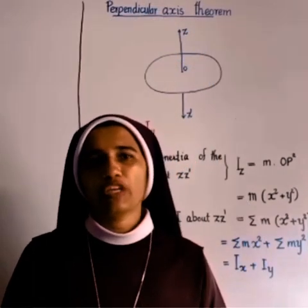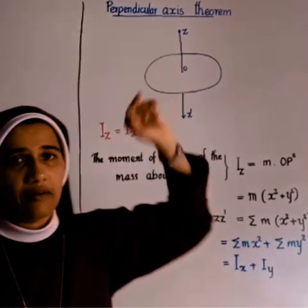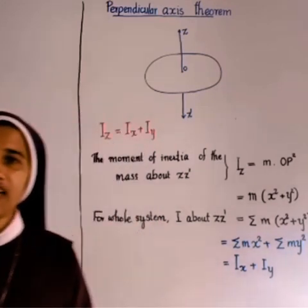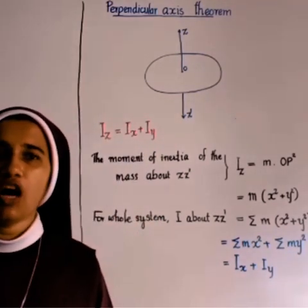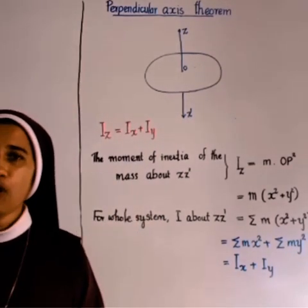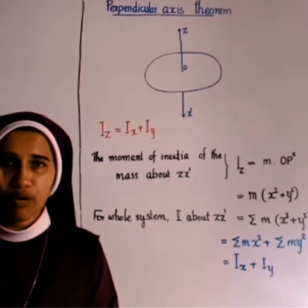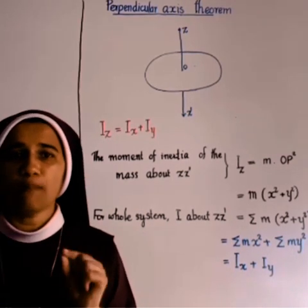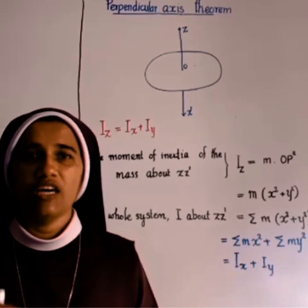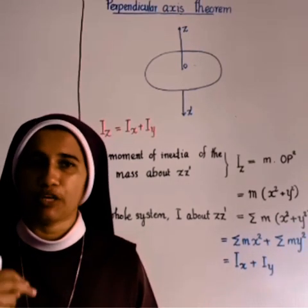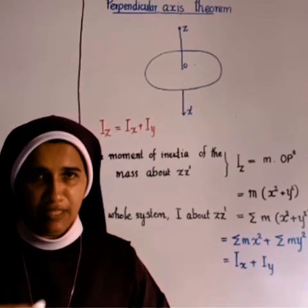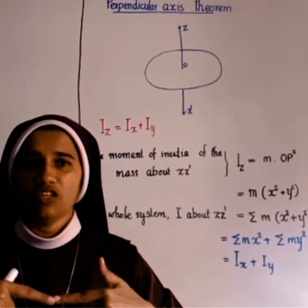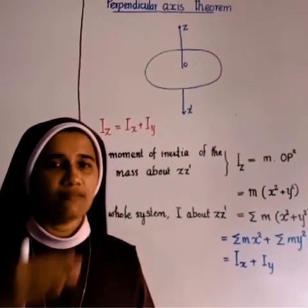Now we move to the perpendicular axis theorem. The perpendicular axis theorem states that the moment of inertia of a plane lamina about an axis perpendicular to its plane is equal to the sum of its moments of inertia about two mutually perpendicular axes lying in the plane of the lamina, intersecting each other where the perpendicular axis meets the plane.